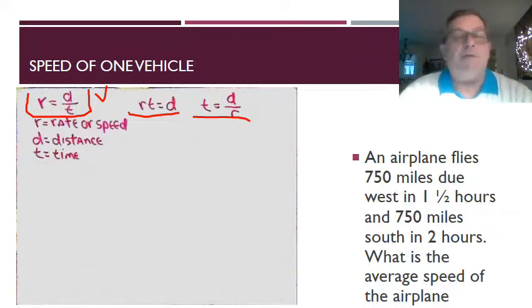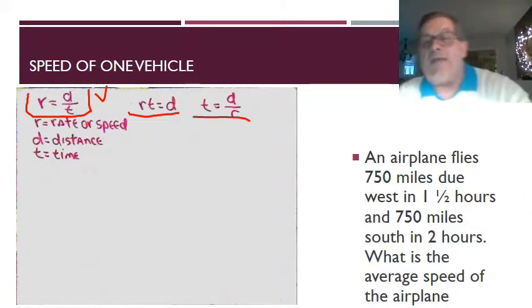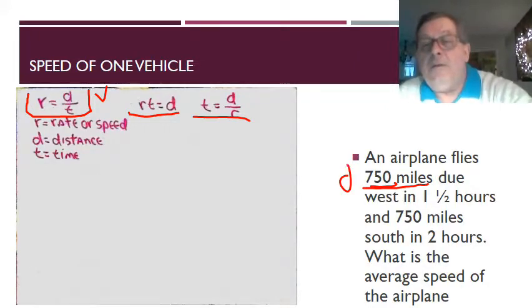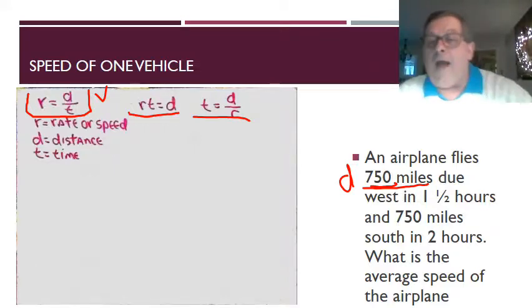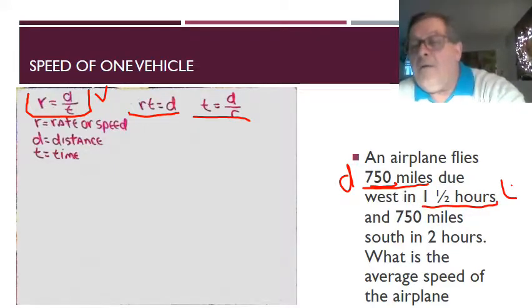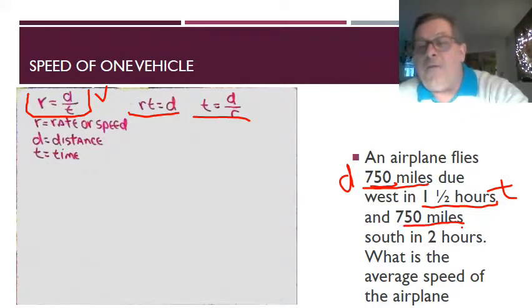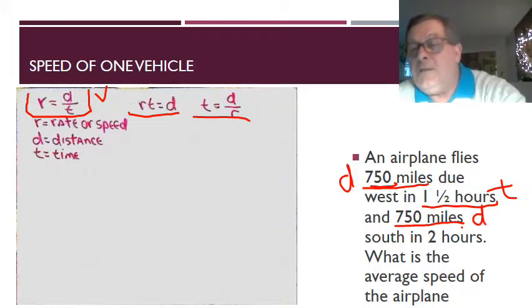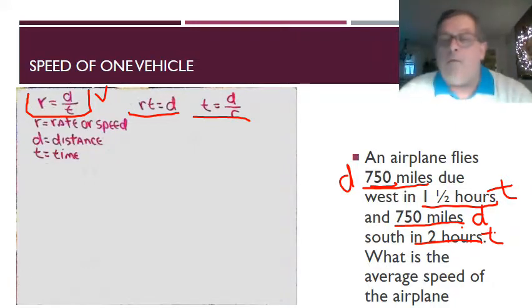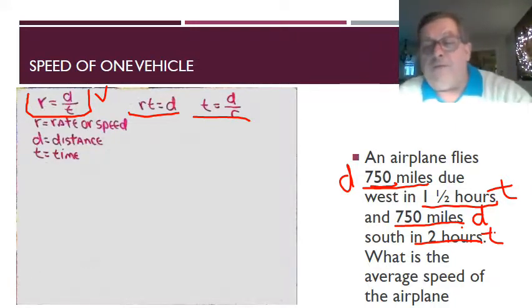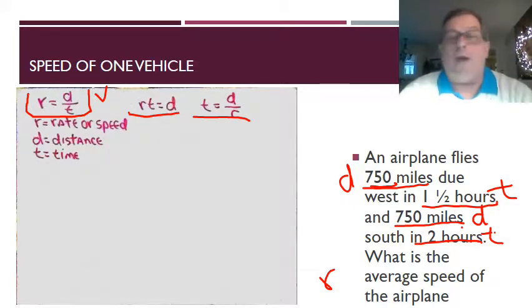Now let's get into this problem itself. So we've got an airplane that flies 750 miles, that's a distance, in one and a half hours, that's a time factor. And then it goes another 750 miles south, that's also distance, and it travels for two hours, that's time. And we're asked to find the average rate of speed, or r, for the airplane.